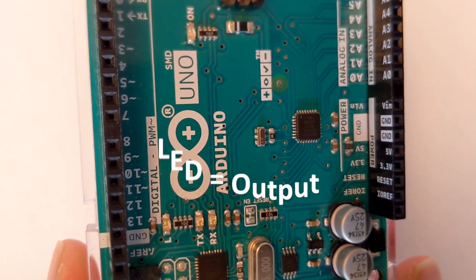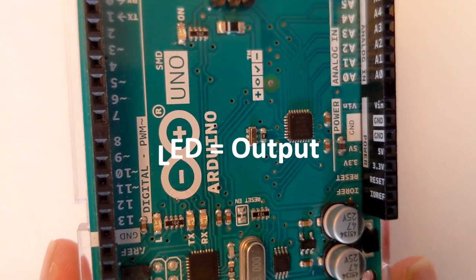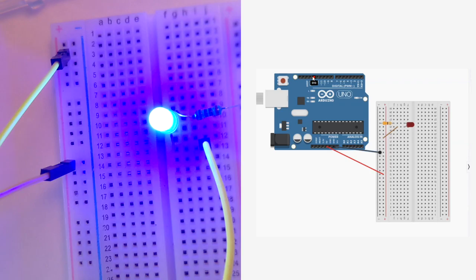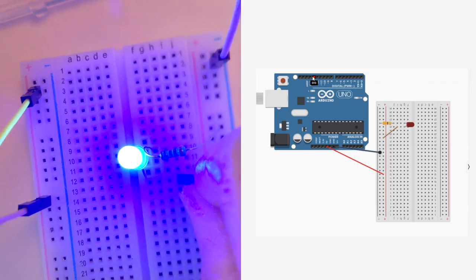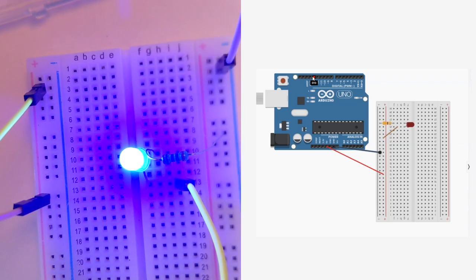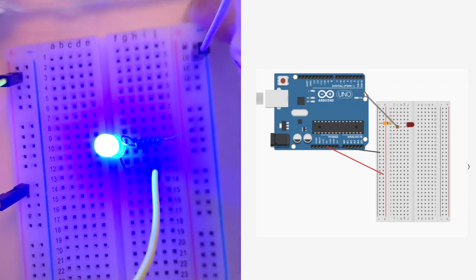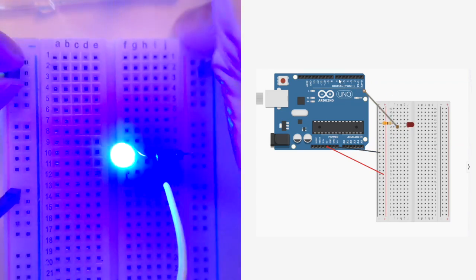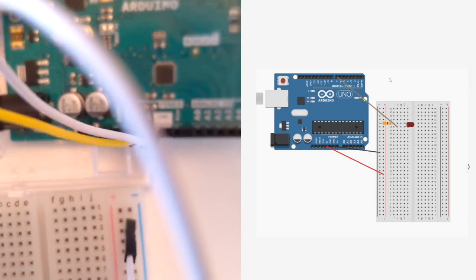The LED is an example of an output that we will connect to one of our digital pins so that we can control it. So we're going to take the wire that is coming from the positive side of the LED. So that's the long leg here. And that's this jumper wire. And instead of connecting that to the positive power rail, we're going to disconnect it and connect it to digital pin 7.